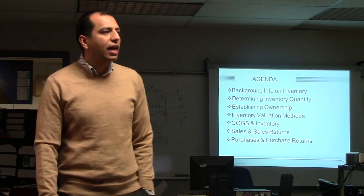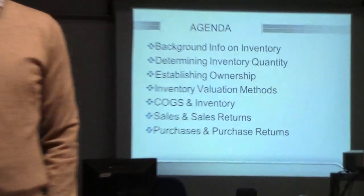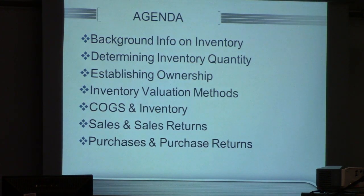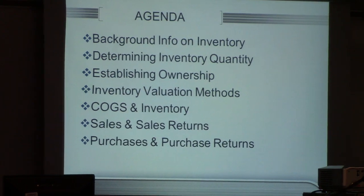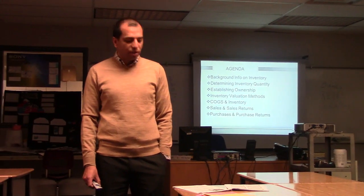We're going to take a look at the agenda. It states that we're going to first talk about some background info on inventory, then move on to determining inventory quantity, establishing ownership for inventory, inventory valuation methods, COGS — cost of goods sold — then sales and sales returns, and purchase and purchase returns. I'll introduce you to a couple of theories, a few formulas, and some journal entries throughout this chapter.